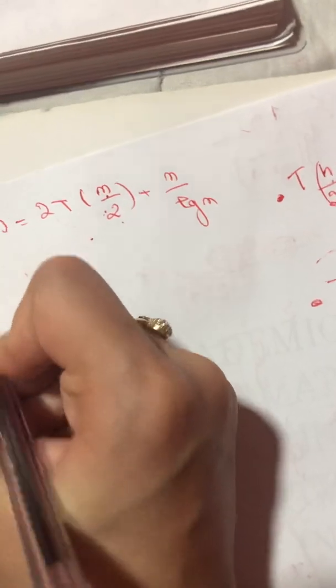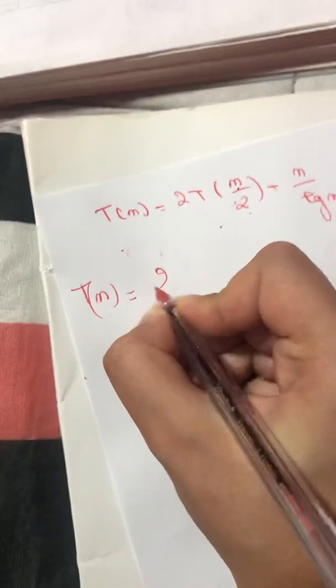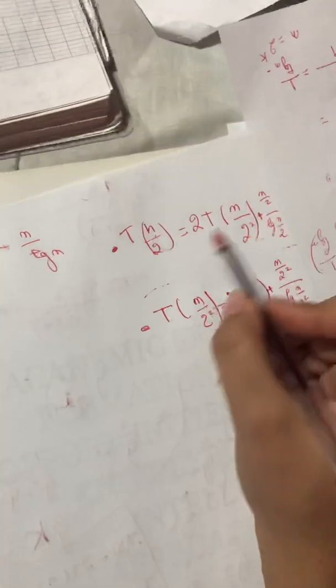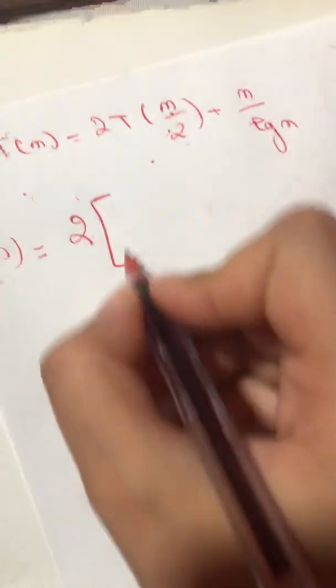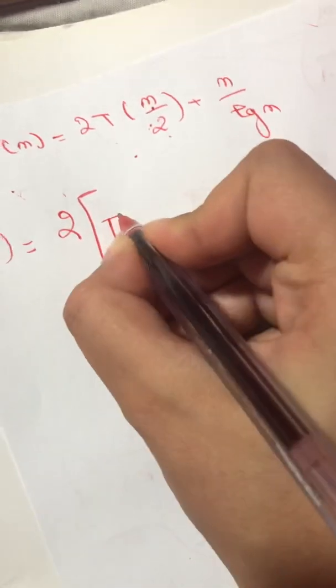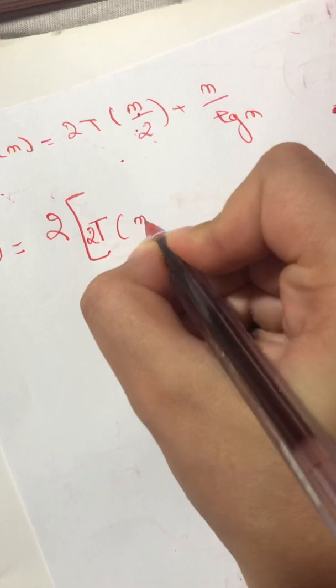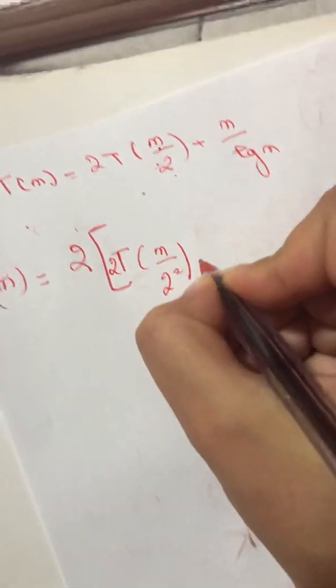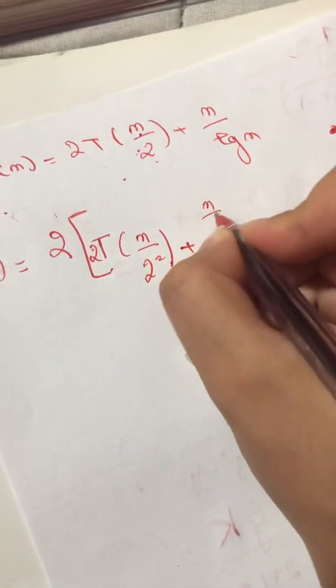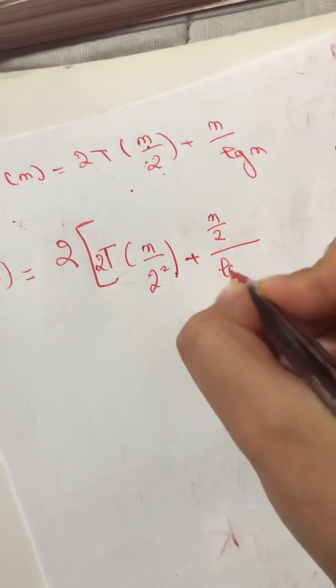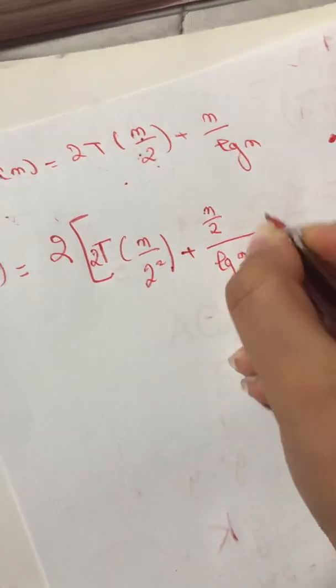T(n) overall equals—I have to copy this—it's 2T(n/2) plus n/2 log(n/2). Plus n log n.